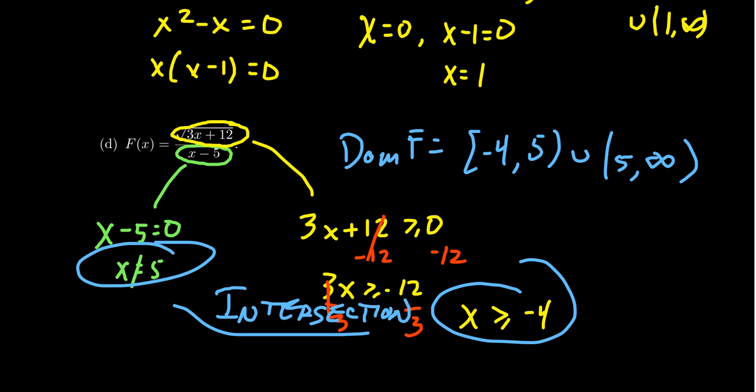So square roots of negatives and division by zero are the two things to look out for when determining the domain of an algebraically defined function. There will be additional restrictions as we learn about other function families, but for a good while, these are the only ones we need to worry about.